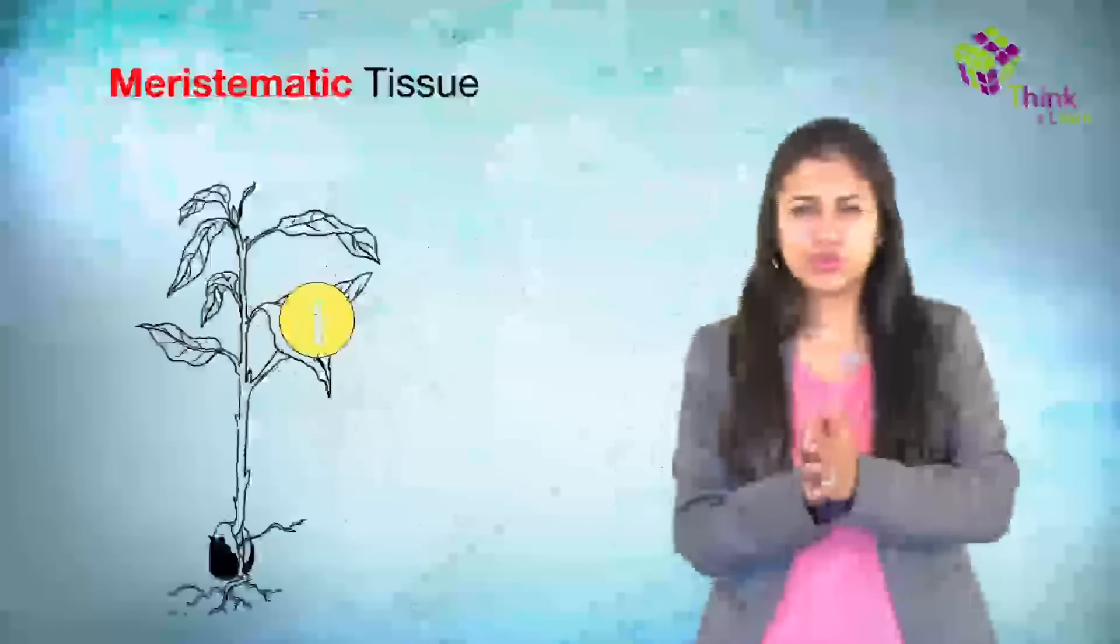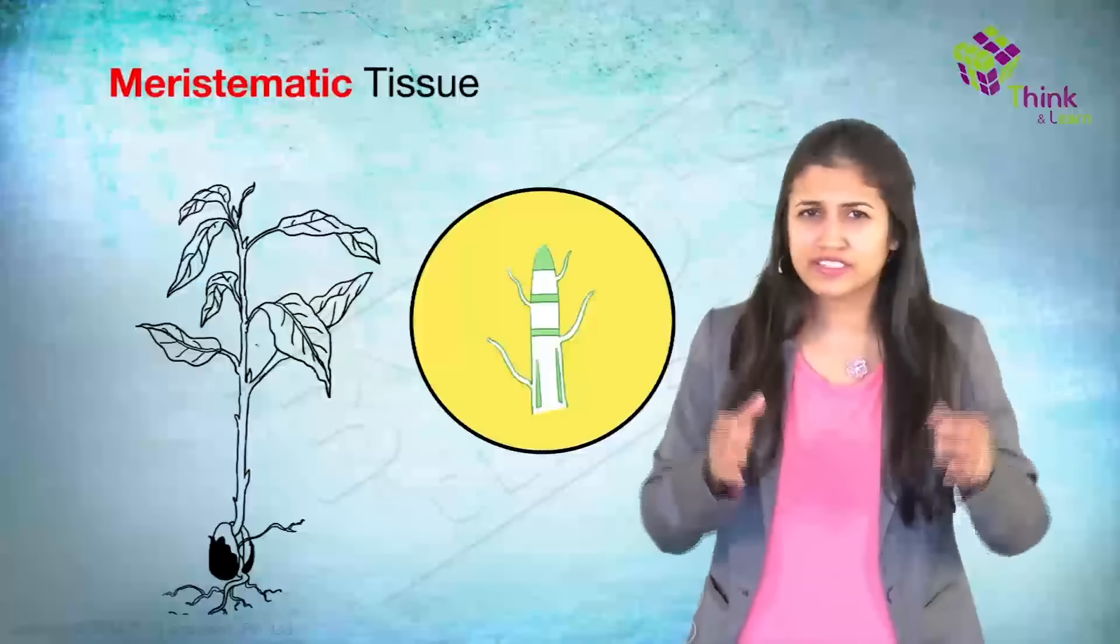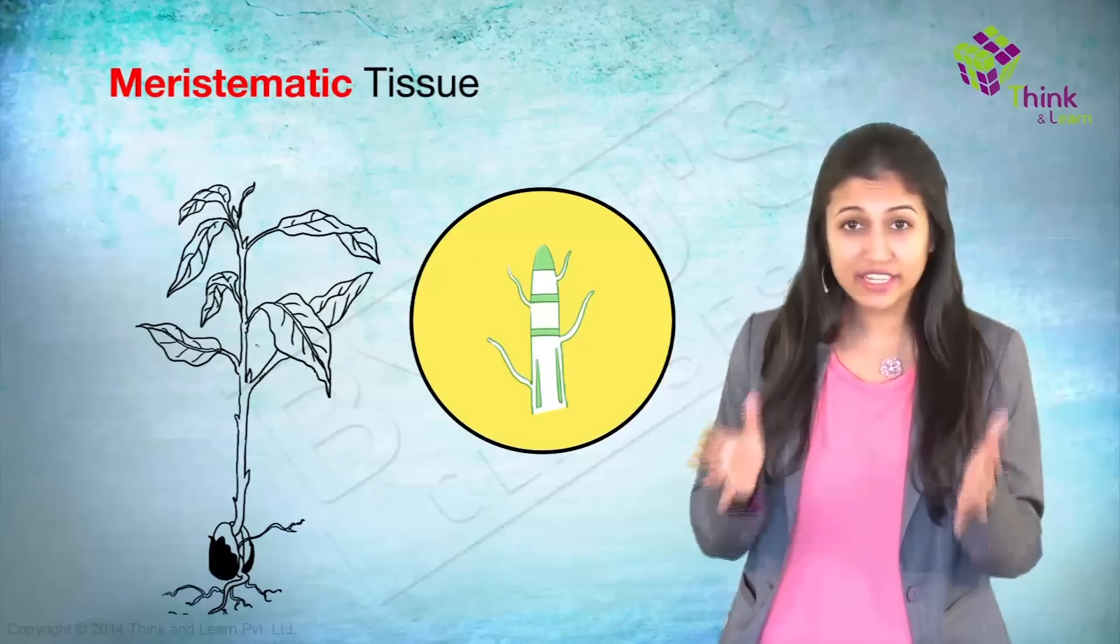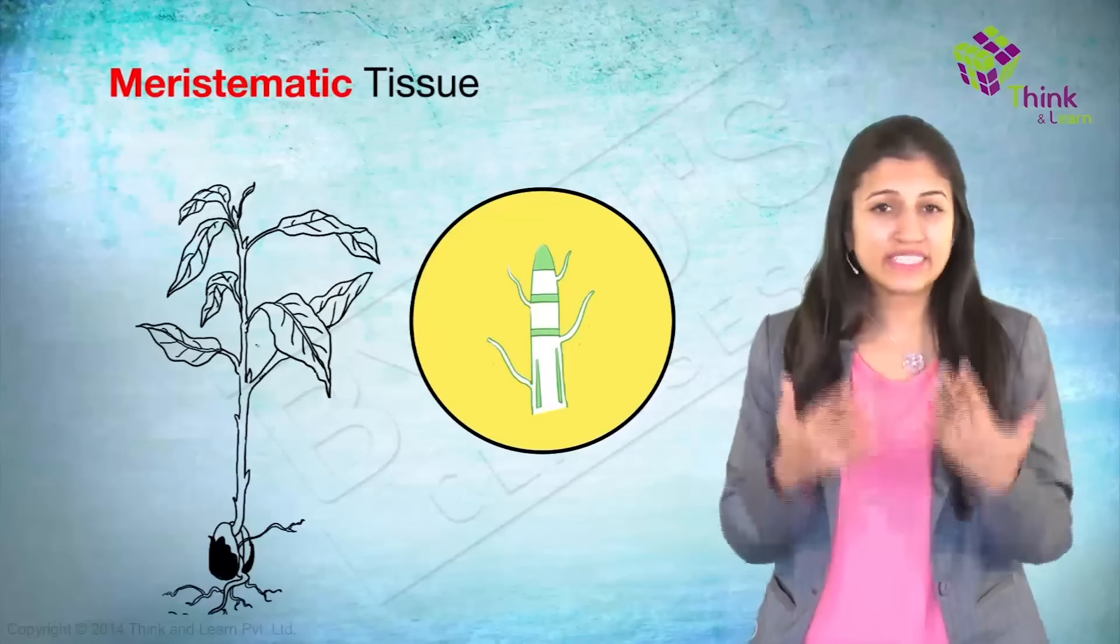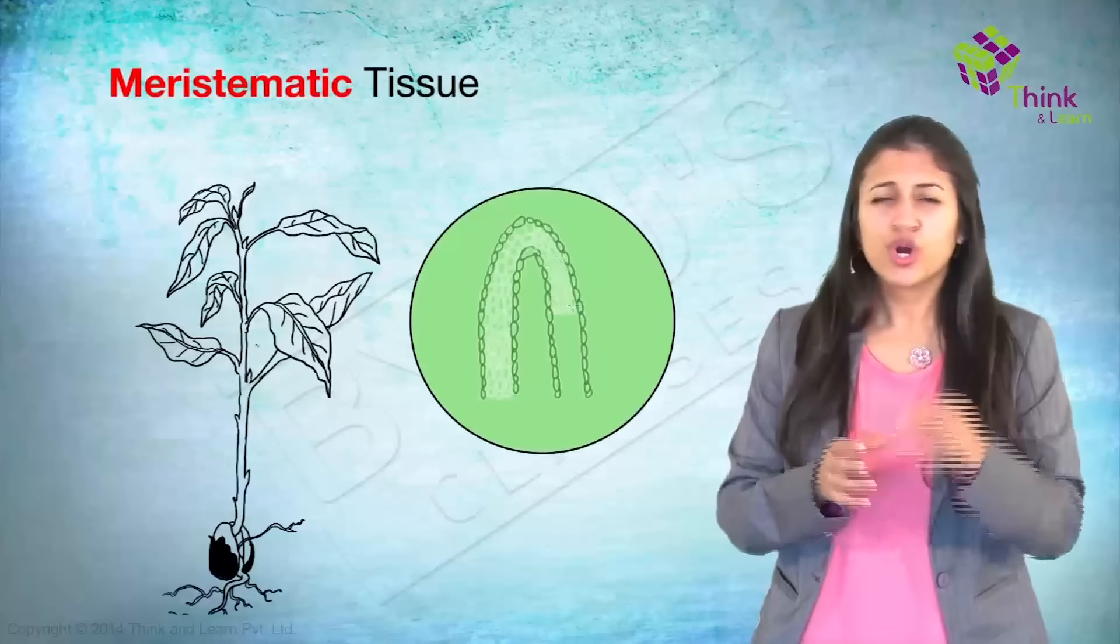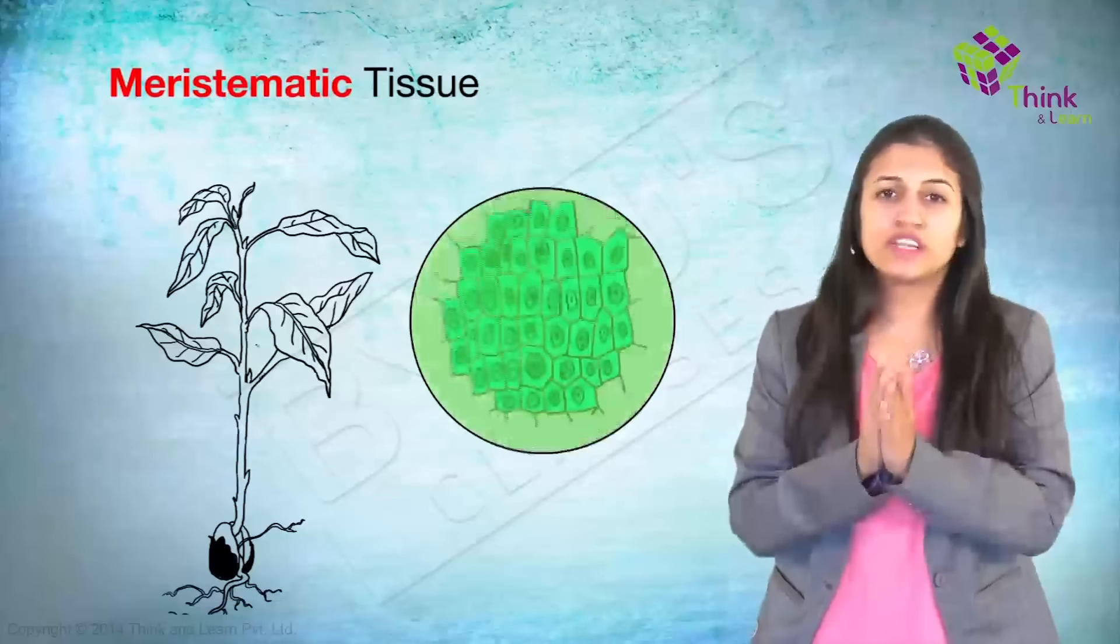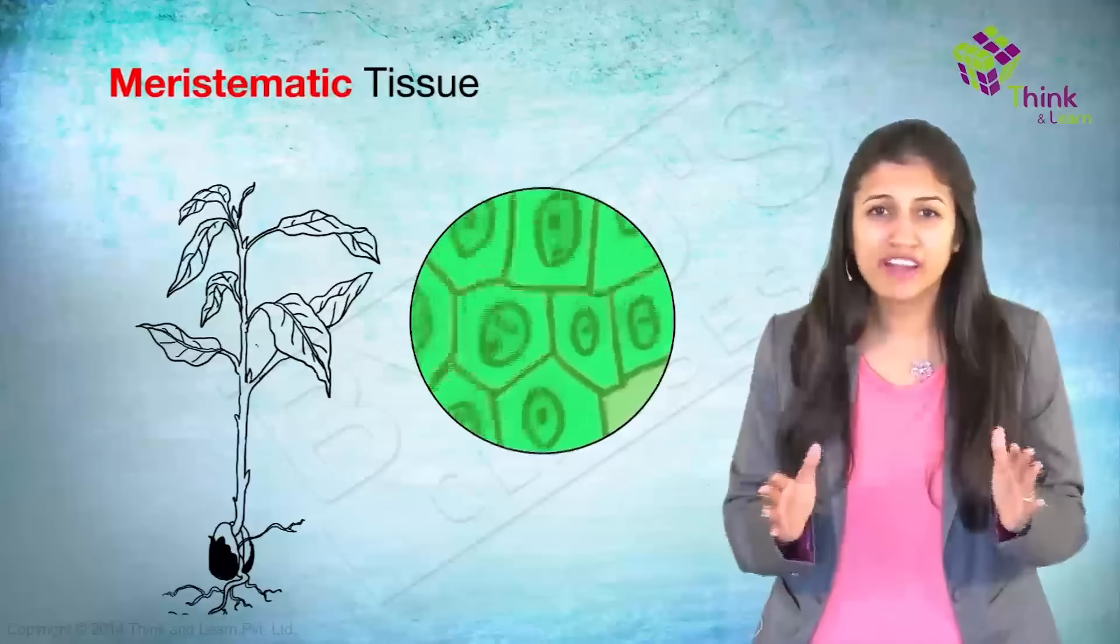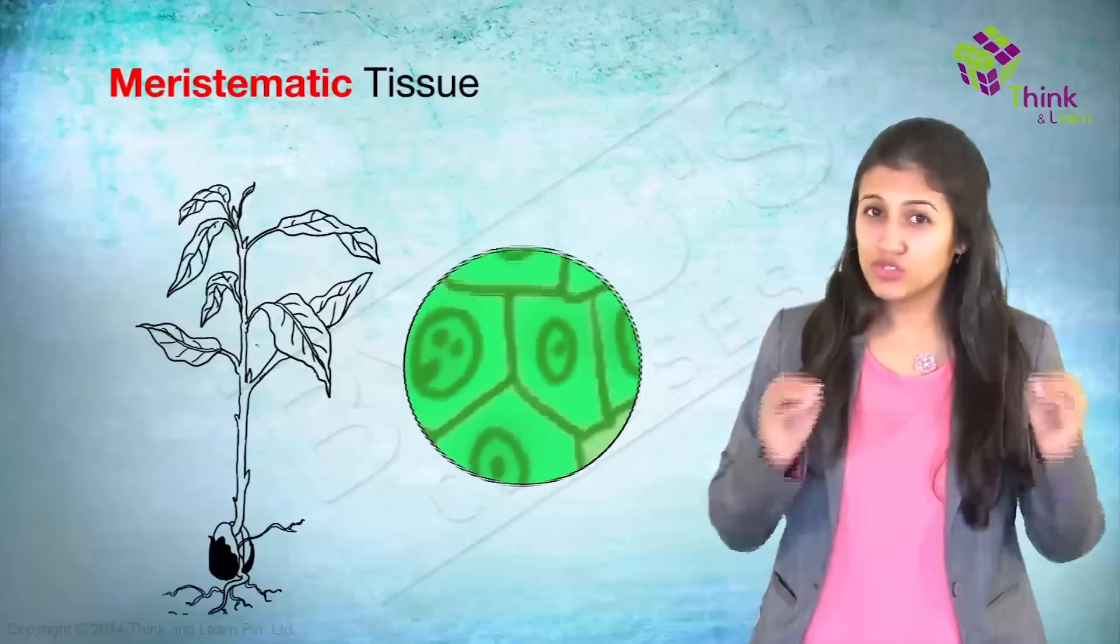Now, meristematic tissue, the tireless, fearless, ever-growing, most active tissue found in the regions where the plants actively grow. They are made up of bunches of small, densely packed, thin-walled cells that keep on dividing to produce new cells.